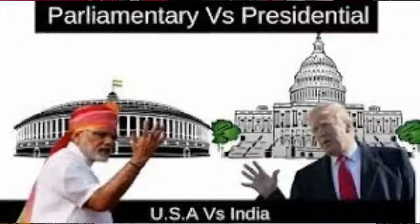What type of democracy is the US? The United States is a representative democracy. This means that our government is elected by citizens. Citizens vote for their government officials. These officials represent the citizens' ideas and concerns in government.